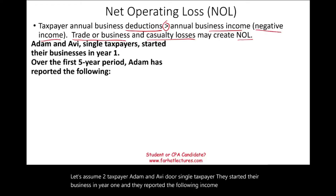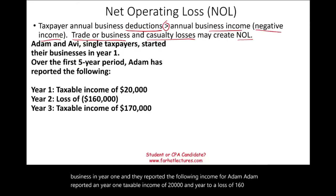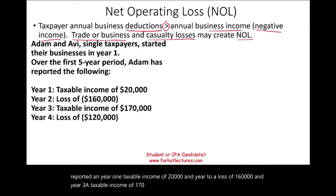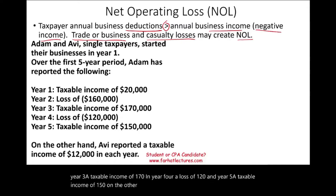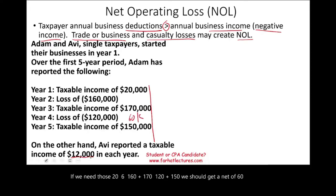For Adam: in year one, taxable income of $20,000; in year two, a loss of $160,000; in year three, taxable income of $170,000; in year four, a loss of $120,000; in year five, taxable income of $150,000. On the other hand, Avi reported taxable income of $12,000 each year. If we net Adam's figures — $20,000 minus $160,000 plus $170,000 minus $120,000 plus $150,000 — we get $60,000 over five years. And $12,000 times five years also equals $60,000 for Avi.